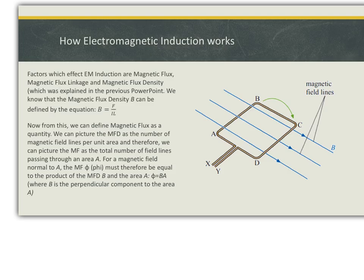In terms, that means the magnetic flux density is equal to the force divided by the current in the wire, times by the length of the wire. From this, we can define magnetic flux as a quantity. We can picture the magnetic flux density as the number of magnetic field lines per unit area. And therefore, we can picture the magnetic flux as a total number of field lines passing through an area A. For a magnetic field normal to A, the magnetic flux, or phi, must therefore be equal to the product of the magnetic flux density B and the area A. Therefore, phi is equal to BA, where B is a perpendicular component to the area A.